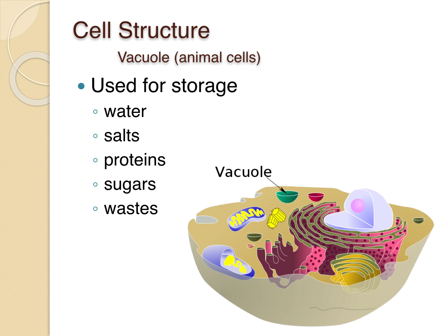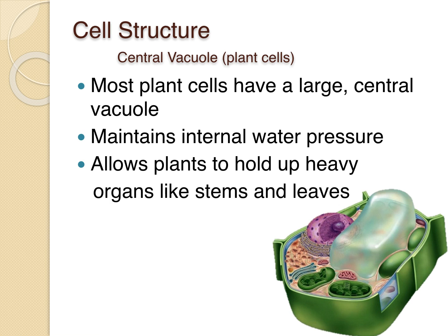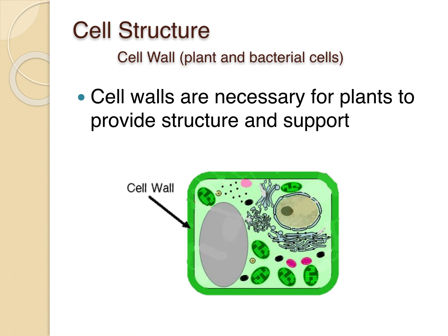Vacuoles in animal cells are very small and used as storage tanks for water, salt, protein, sugar, and wastes. The central vacuole in plants is large and maintains internal water pressure, allowing plants to hold up heavy organs like stems and leaves. One reason the central vacuole is so important is that, while the cell wall provides structure and support, without the vacuole's internal water pressure, the cell wall would collapse.